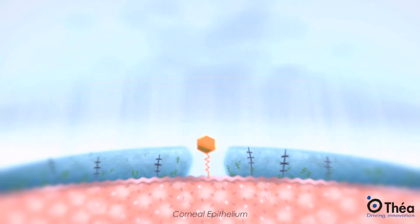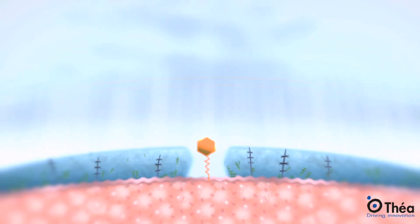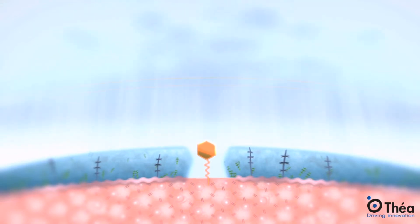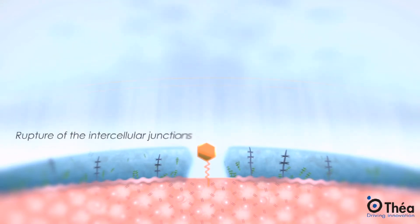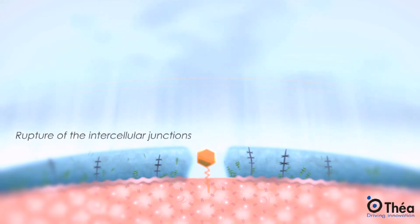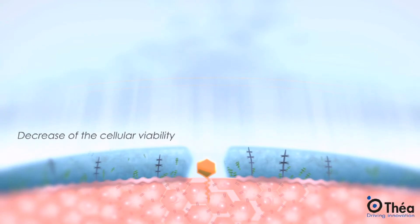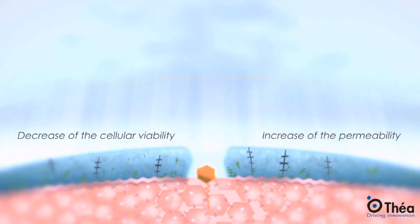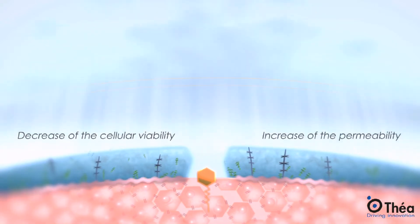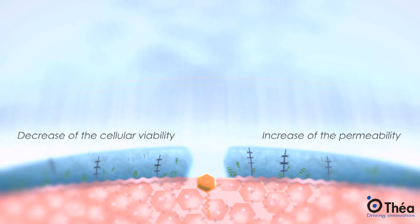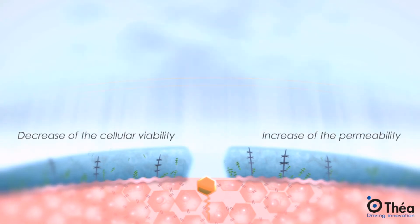No longer protected, the corneal epithelium is altered by BAC with microvilli loss and rupture of the intercellular junctions. These all link to a significant decrease of the cellular viability and increase of the permeability, inducing penetration of ionic solutions, lipophilic substances and microorganisms.